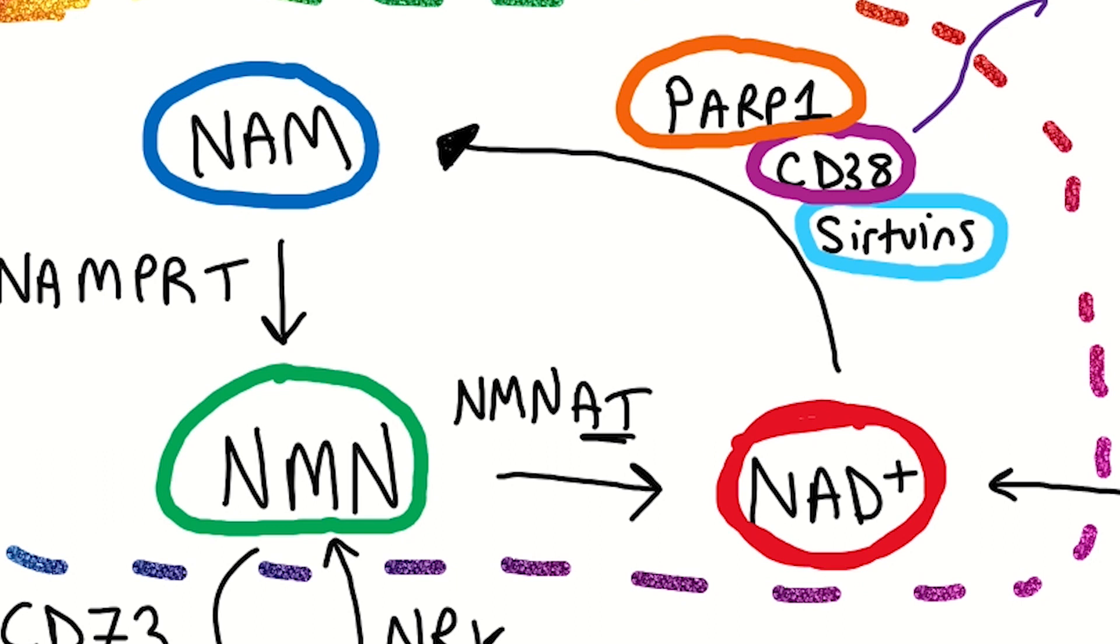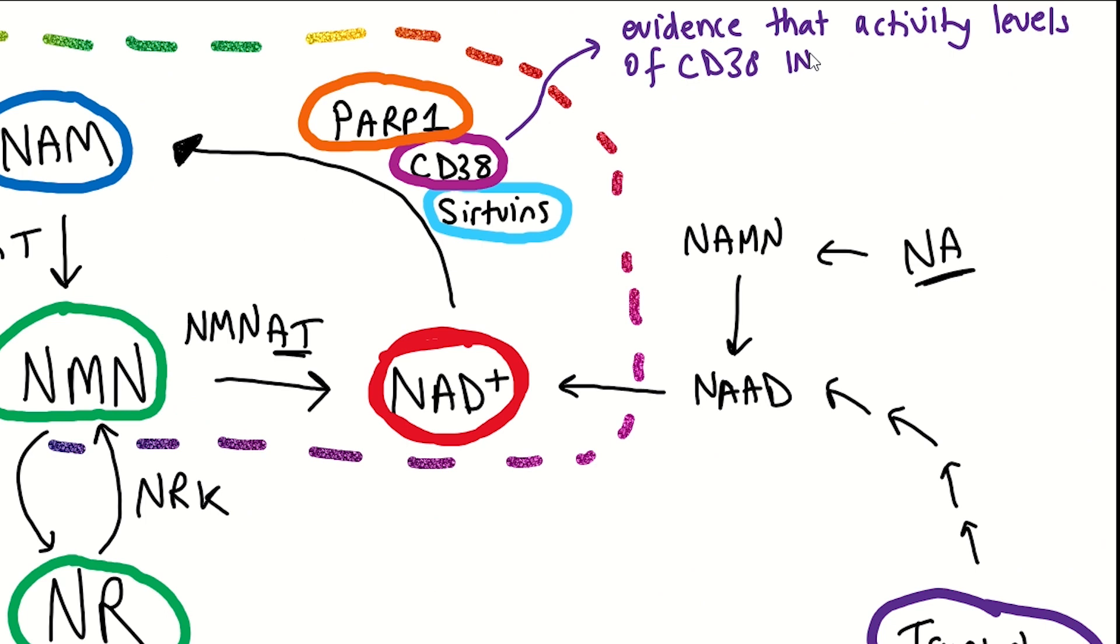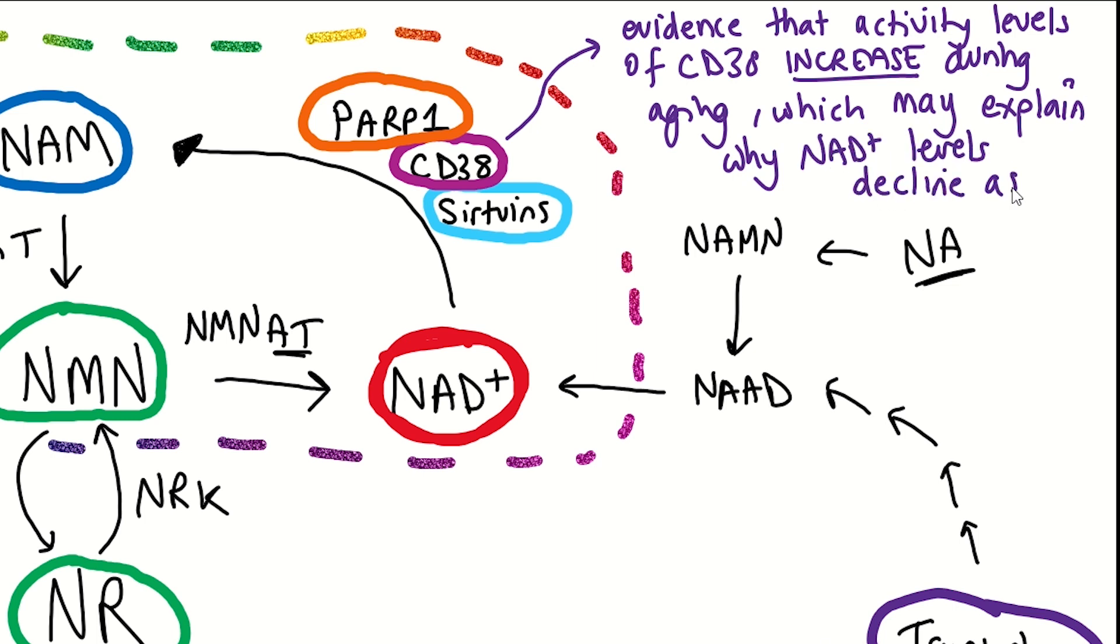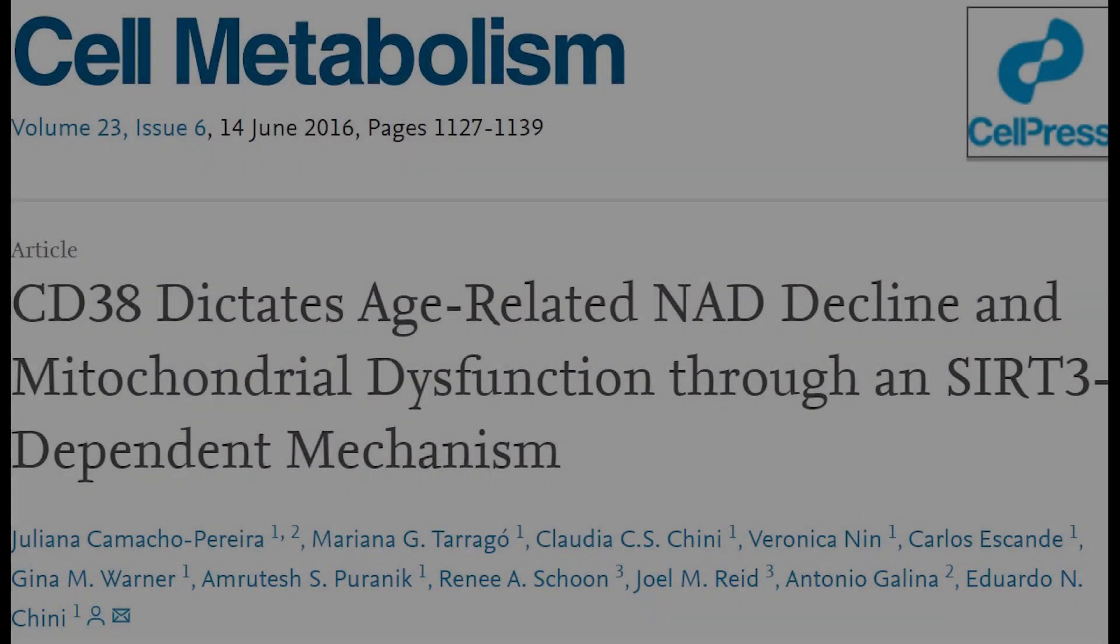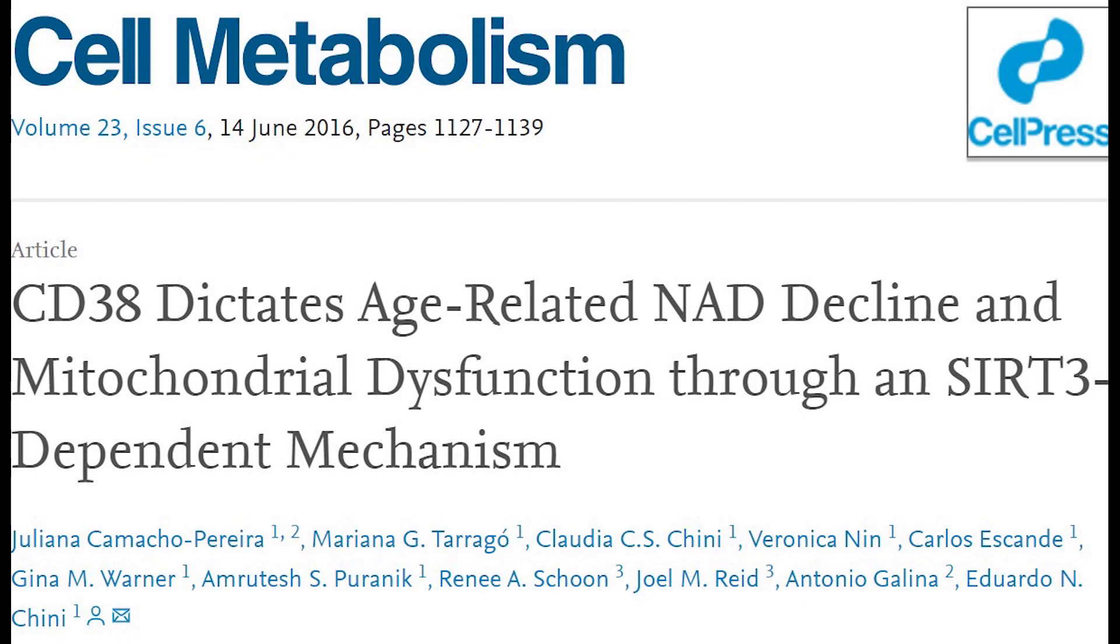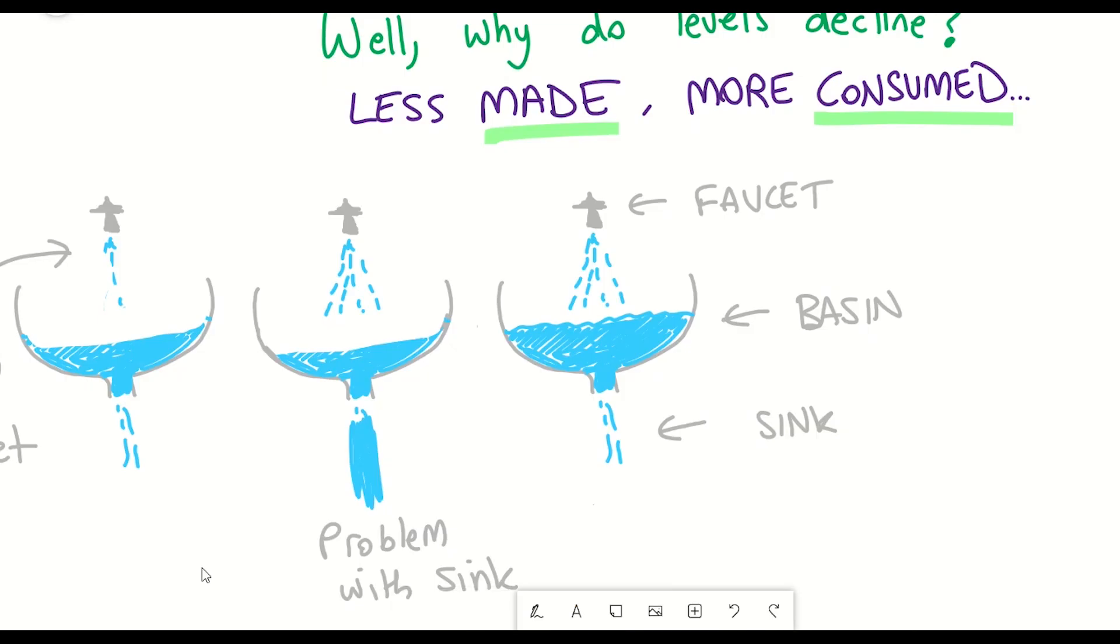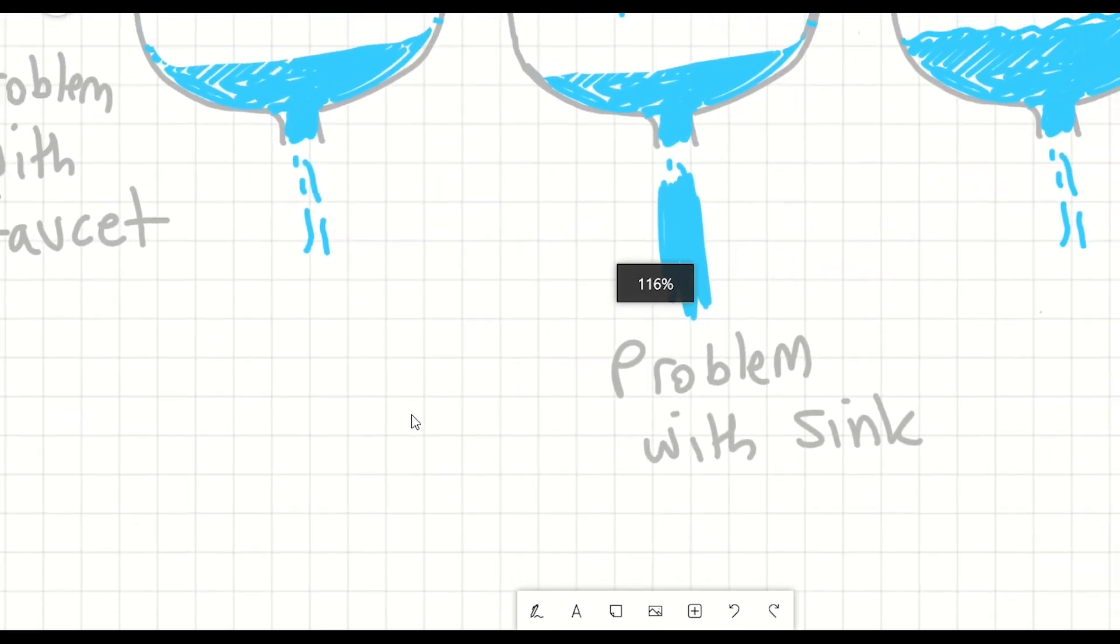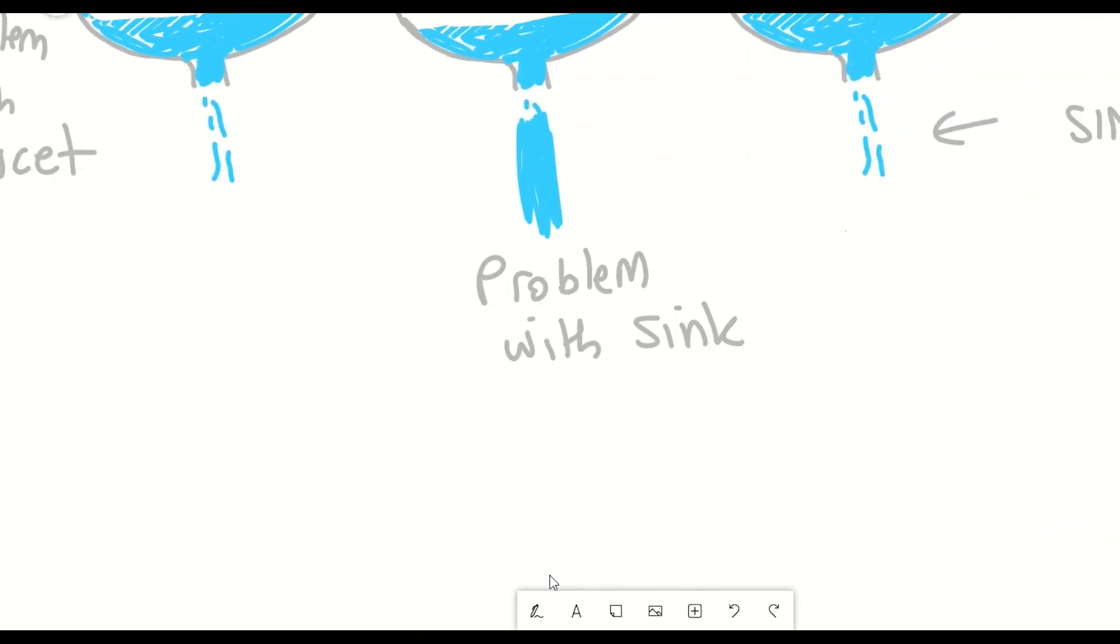Now, previous work has shown that the protein levels of CD38 increase during aging, and this can be seen in multiple tissues. Mice completely lacking this protein were protected from age-related NAD decline and they also had enhanced metabolic health and mitochondrial function. This was suggesting that CD38 is a primary NAD plus consuming enzyme potentially responsible for age-related NAD decline in the tissues.